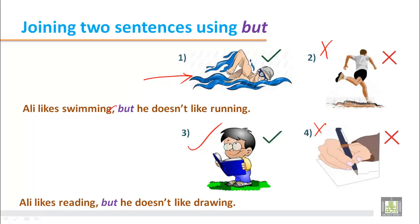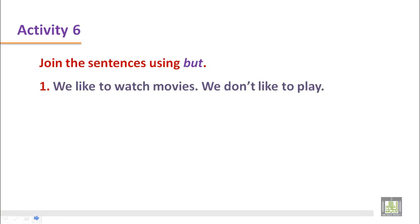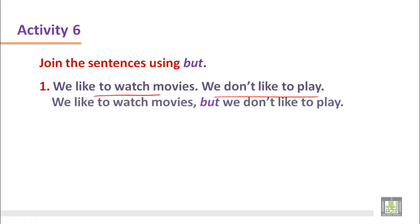Activity 6, join the sentences using 'but'. Sentence one: the first sentence is positive and the second is negative. The ideas are contrasting each other. So the answer is: 'We like to watch movies, but we don't like to play.' There is a comma before the conjunction 'but'.